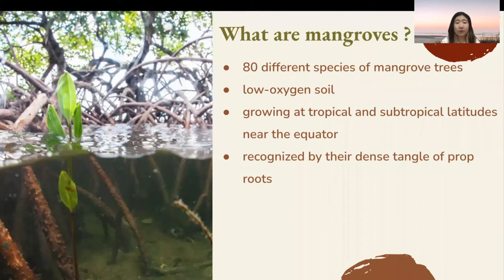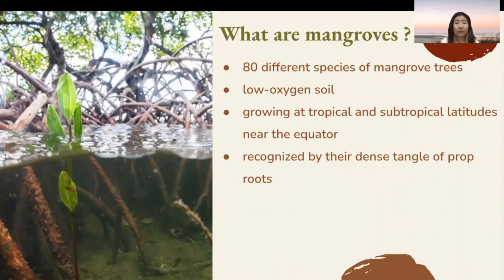This tangle of roots allows the tree to handle the daily rise and fall of tides, which means that most mangroves are flooded for at least a while each day. The roots also slow the movement of tidal water, causing sediment to settle out of the water and build up the muddy bottom. Mangrove forests are able to reduce erosion from storm surges, currents, waves, and tides. The intricate root system of mangroves also makes these forests attractive to fish and other organisms seeking food and shelter from predators.